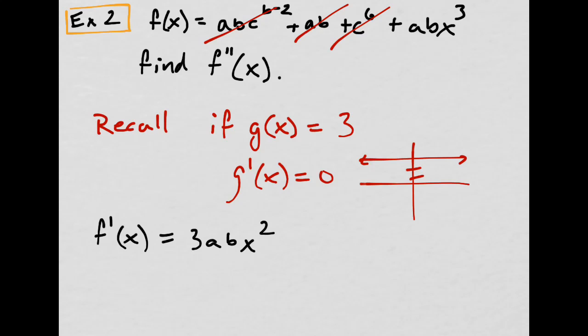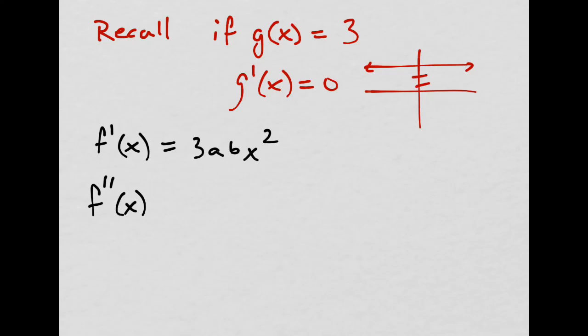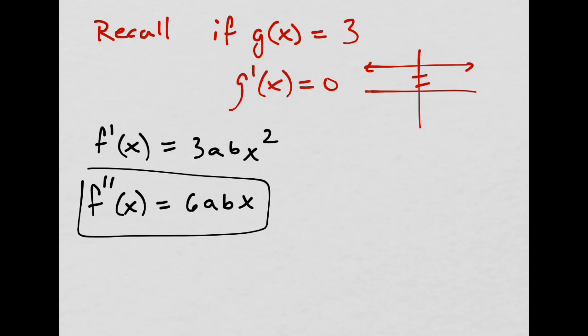And then the second derivative. Well, I take down the 2, just put it out in front. This would be 6abx to the 1. There you go. Why are you crying? Stop crying. I made this dinner so you enjoy it, so enjoy it. Stop crying.